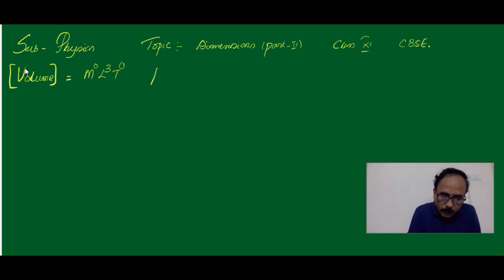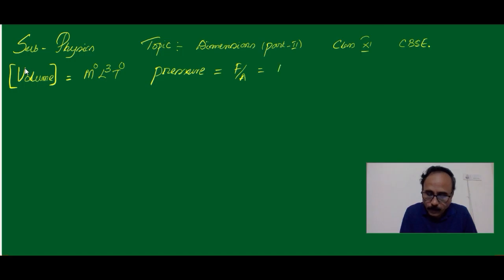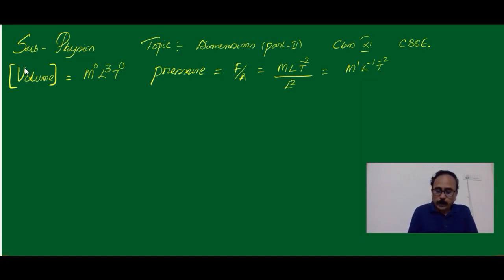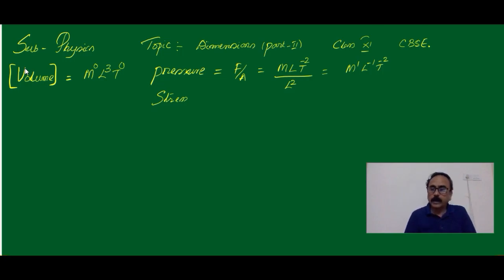Now let's talk about pressure. Pressure is nothing but force per unit area. The force is M1, T-2 and area is L2. Therefore, the formula for pressure will be M1, L-1, T-2. Pressure and stress will have the same Dimensional Formula because both are force per unit area only.